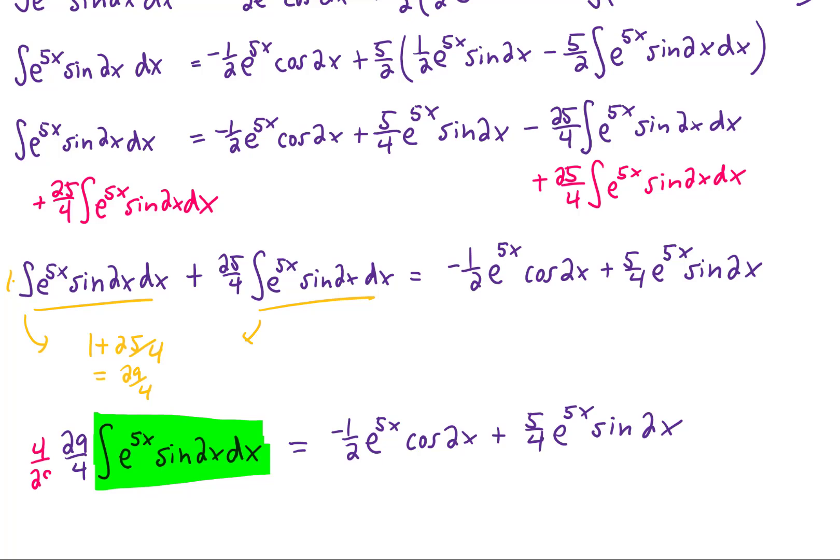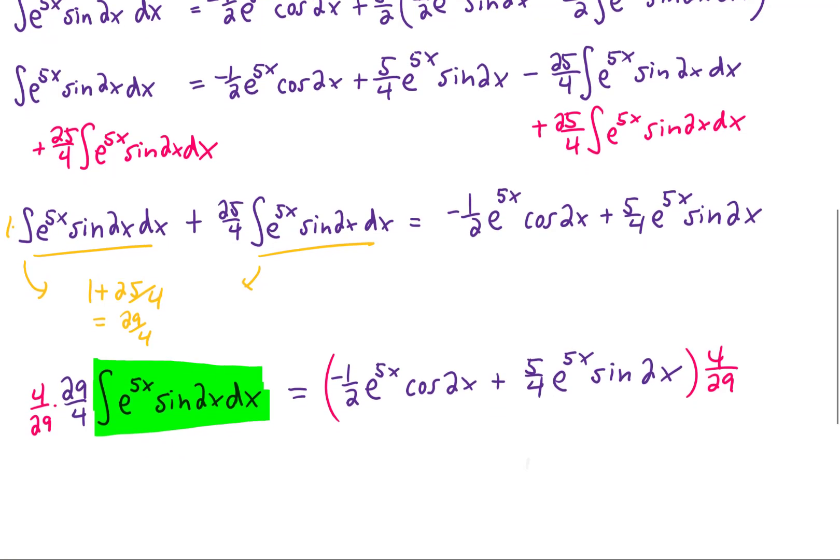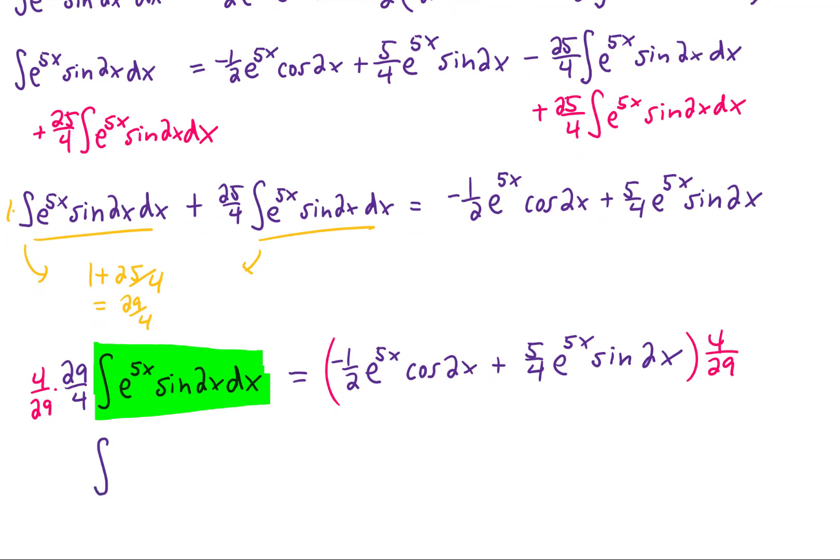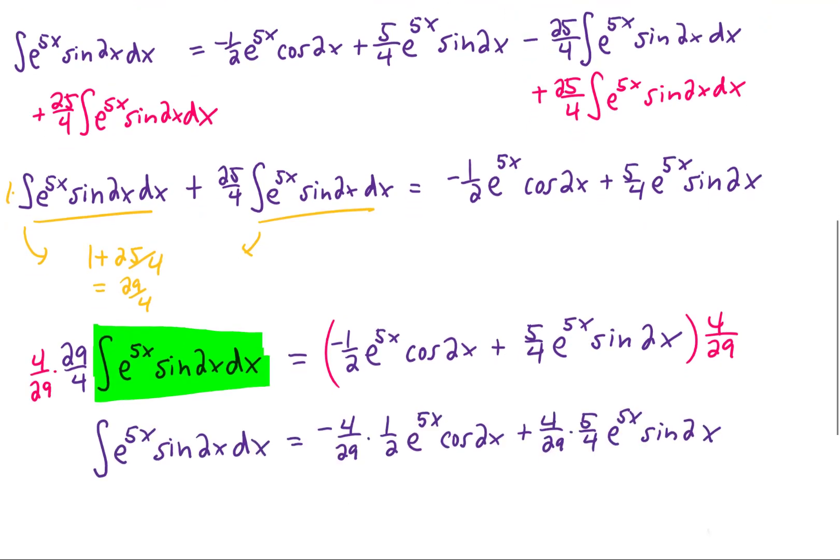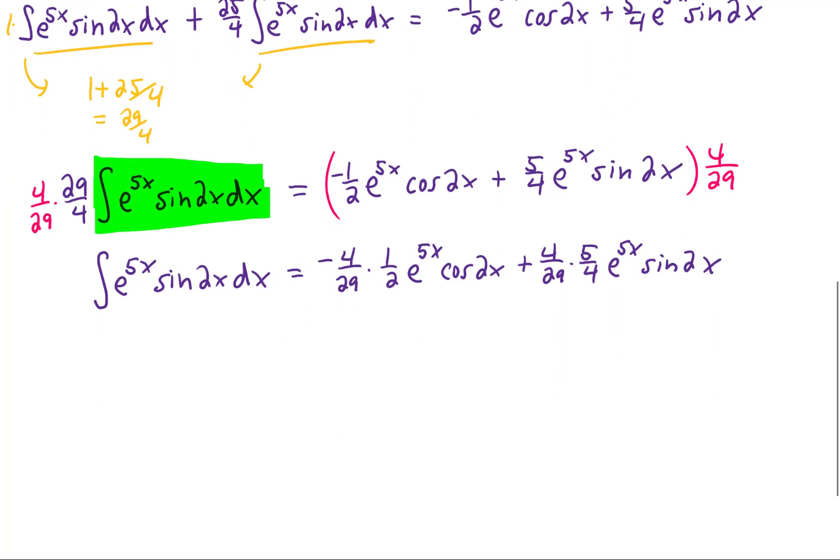That is the same thing as multiplying both sides of the equation by 4 29ths. If we do that, we get the integral we were looking for by itself on the left-hand side. Multiplying that 4 29ths through the parentheses and simplifying some fractions gives us finally this result right here, which we can just tack a plus C onto the end of.